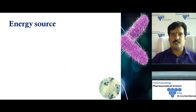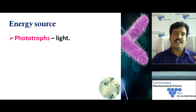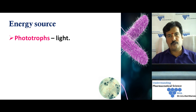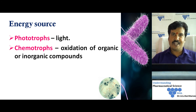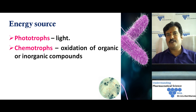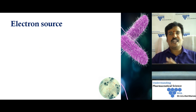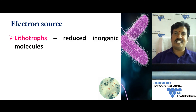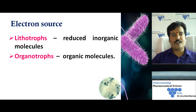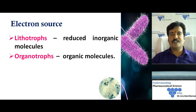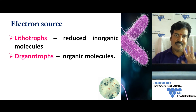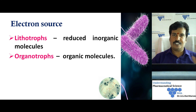Based on energy source, bacteria are classified into phototrophs — those that obtain energy from light — and chemotrophs — those that obtain energy by the oxidation of organic or inorganic compounds. Based on electron source, bacteria are classified into lithotrophs — which obtain electrons from inorganic sources — and organotrophs — which obtain electrons from organic molecules.